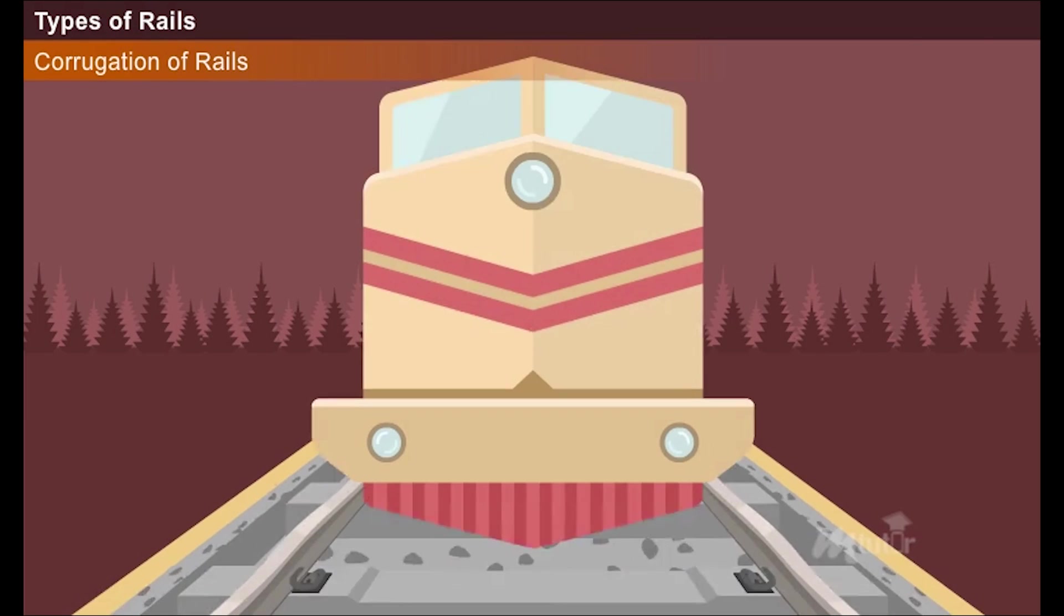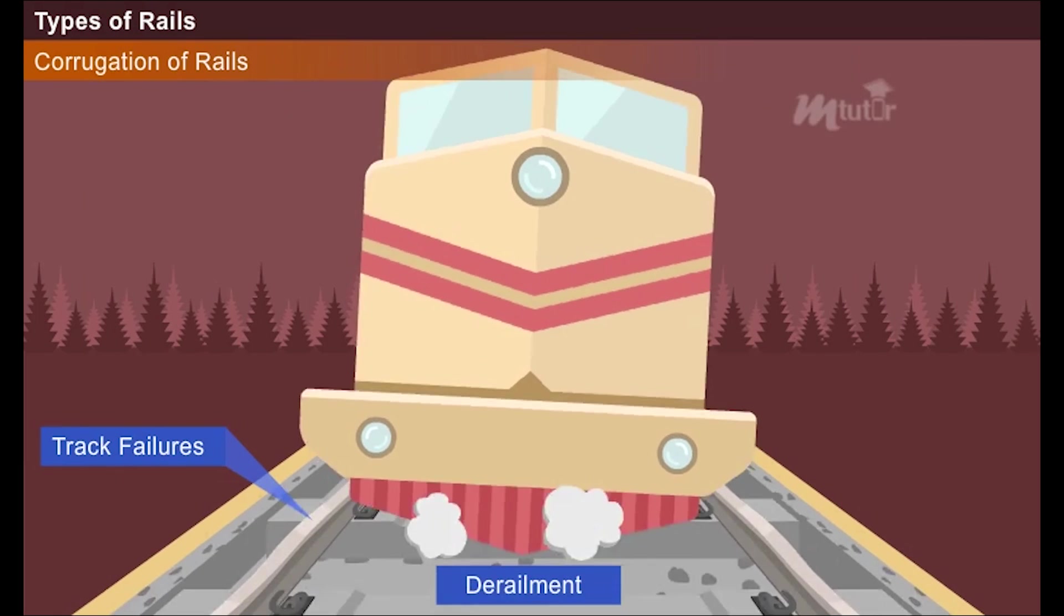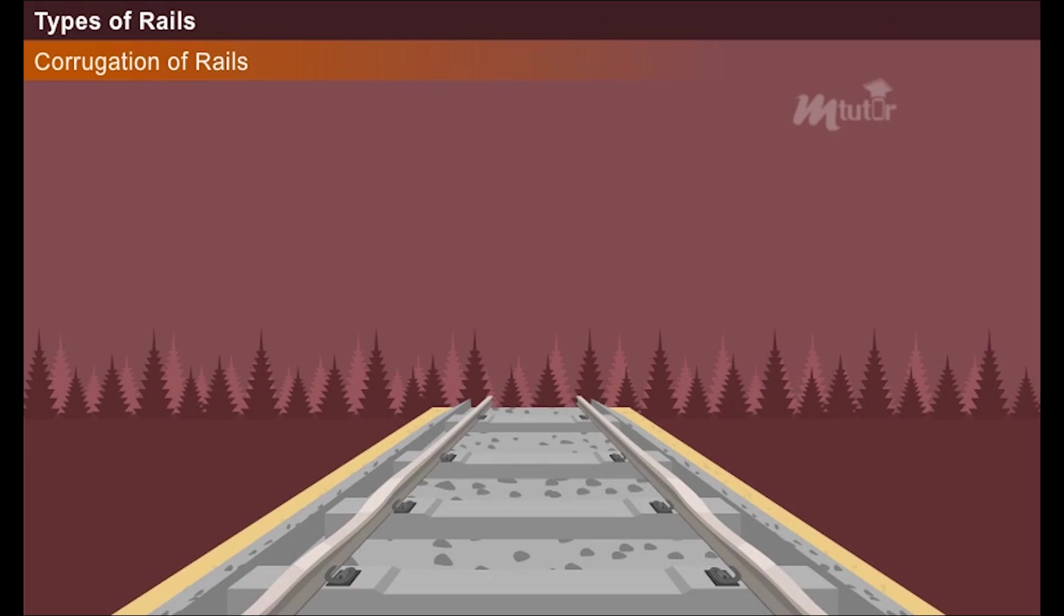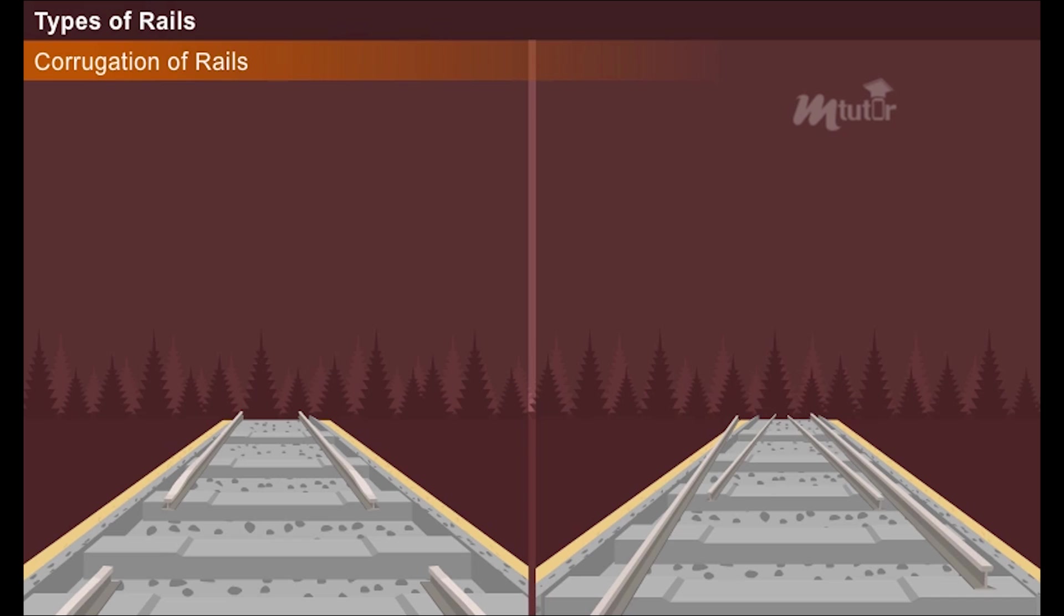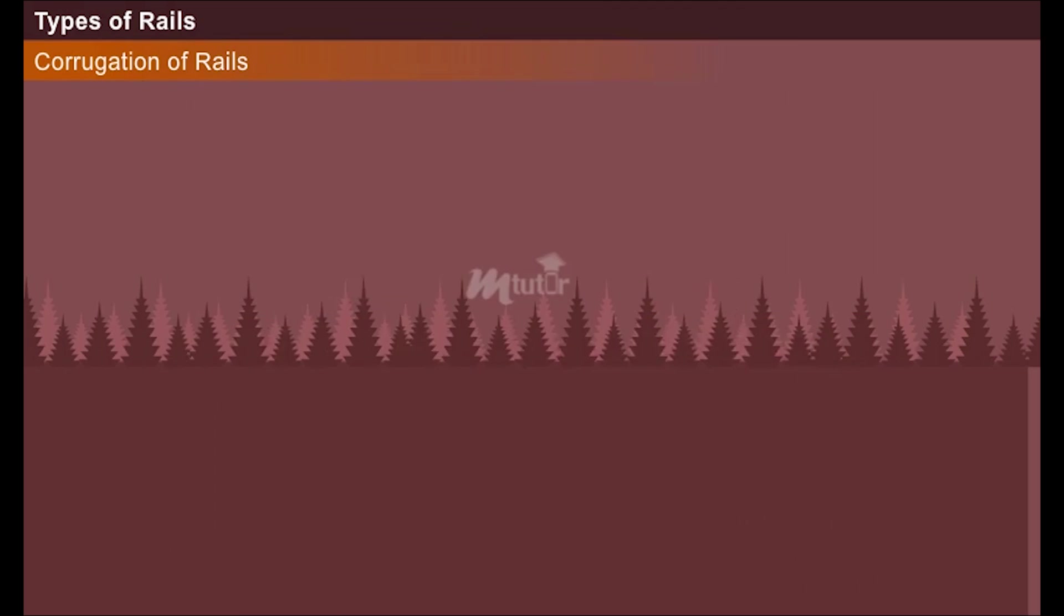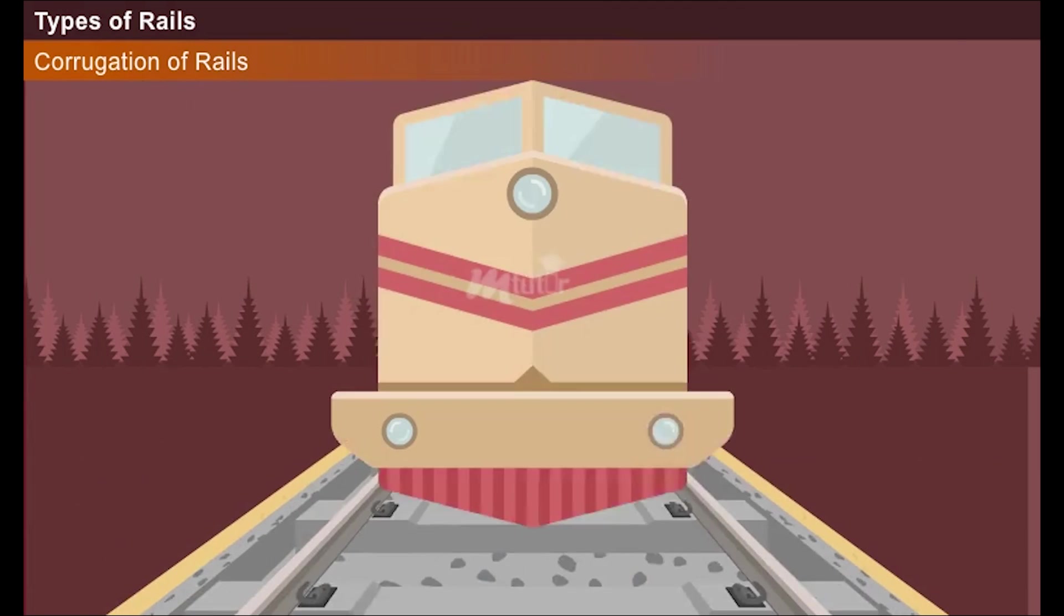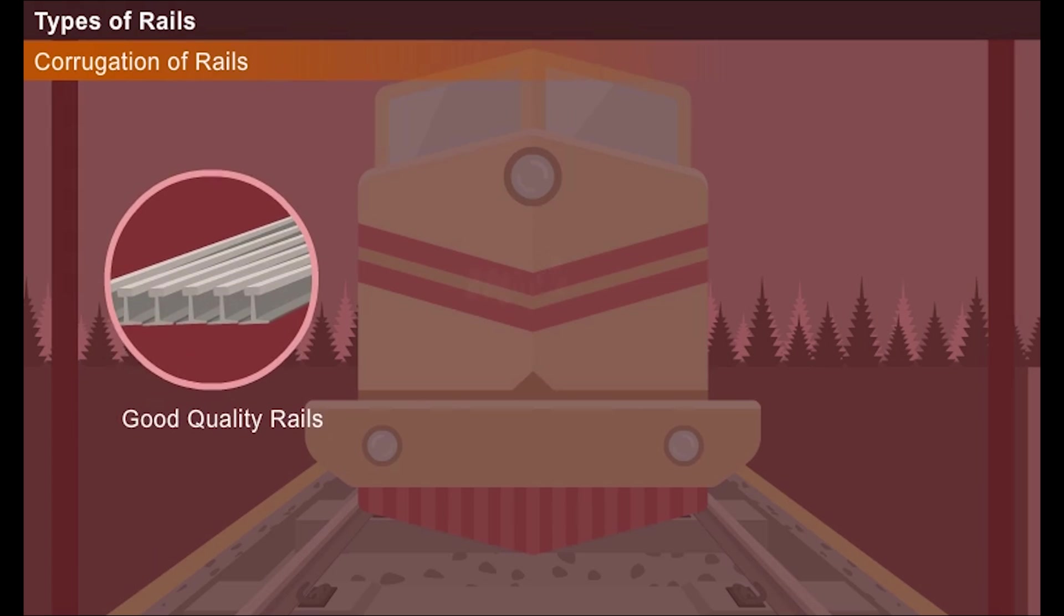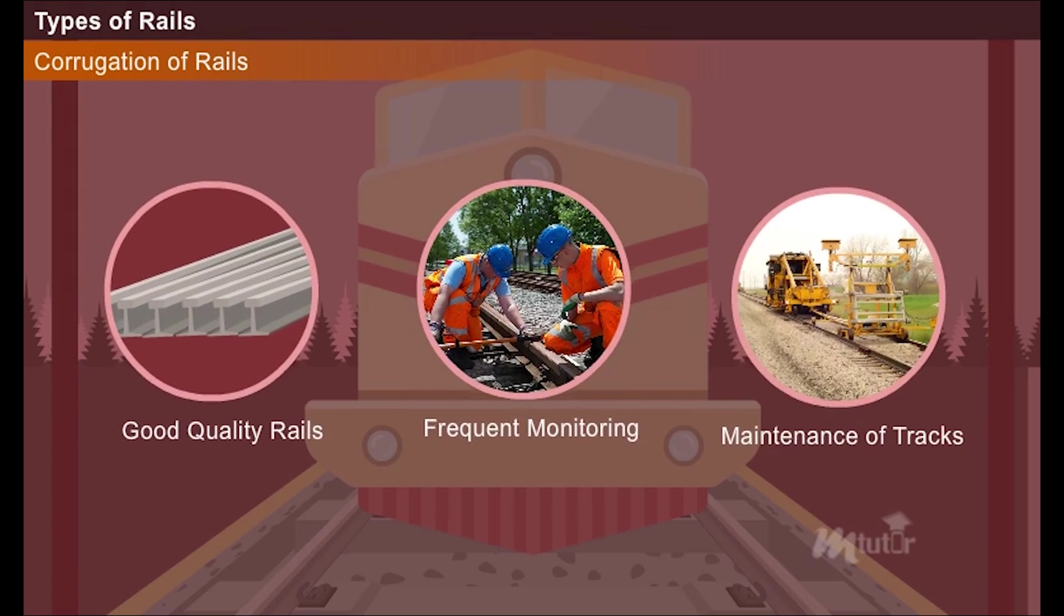Majority of the track failures and re-railments originate due to the defects in the rails. According to the degree of defect, a part of the rail or the whole rail is either removed or replaced. Thus the safety of trains is ensured by using good quality rails and frequent monitoring and maintenance of tracks.